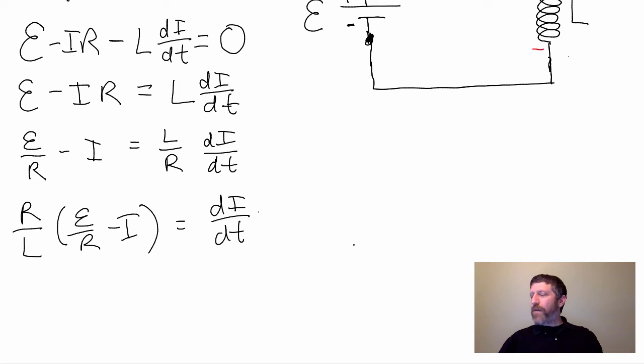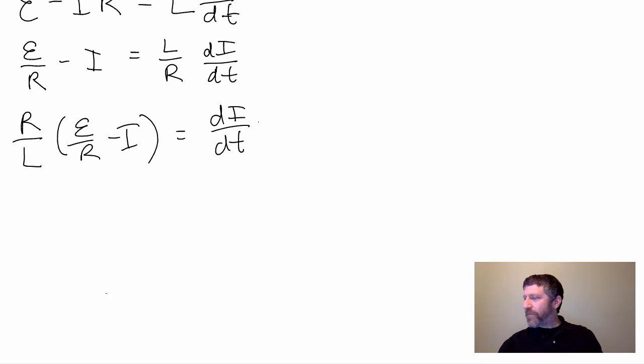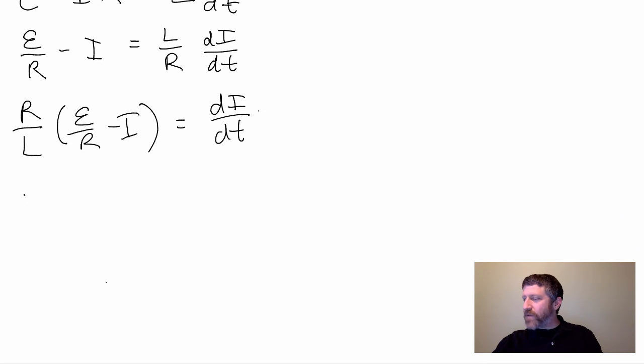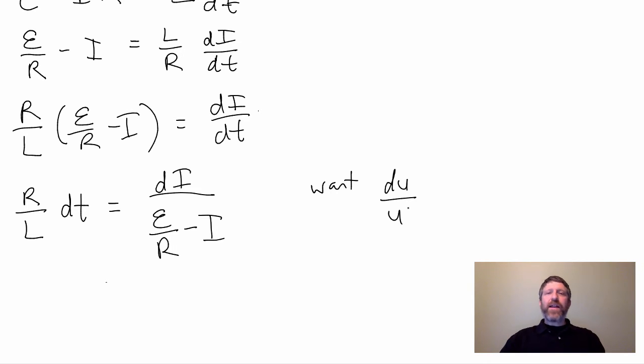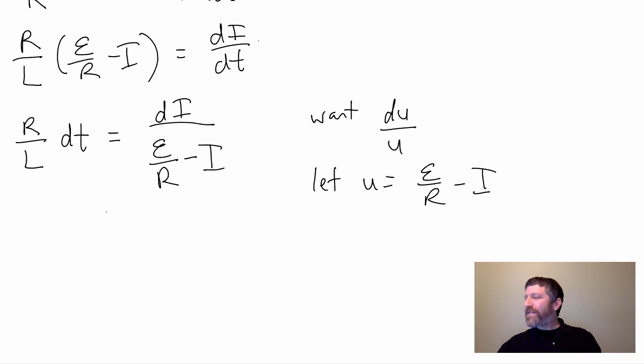And now I want to separate my variables, so I'm going to get this. DT goes on this side, so I'll keep it with the R over L. R over L times dT equals dI over E divided by R minus I. Now what I seek on this right side, I want dU over U on the right side. And actually this is probably the easiest one we've done, because what's on top, if I let U equals E over R minus I, what is dU?